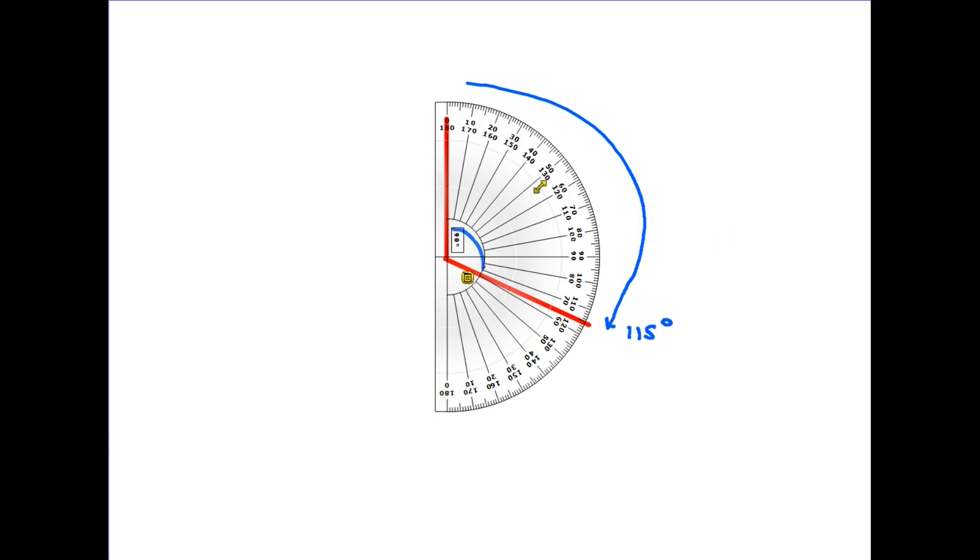Looking at the protractor more closely you can see there's another scale running from zero on the other side here which then runs anti-clockwise. This is so you can measure angles either in a clockwise or anti-clockwise direction.